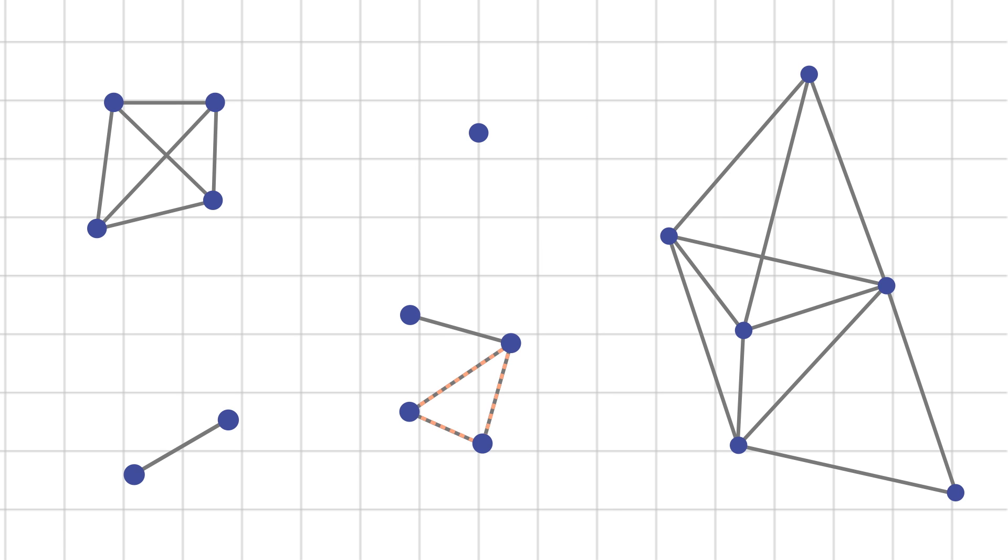This three vertex complete graph overlaps with this two vertex complete graph, but they don't collectively make a four vertex complete graph.